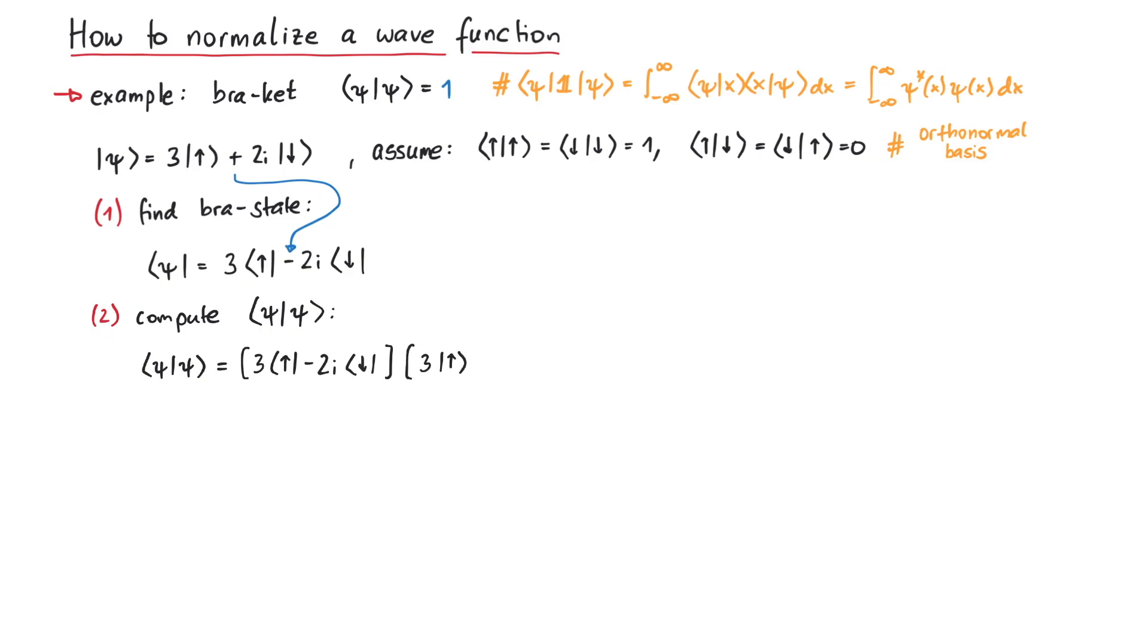The second step is to compute the bra-ket product of psi with itself. After multiplying the brackets, you see why we need the relations of up and down with each other. Therefore, we know that only two terms remain, which add up to 13. Now this should be equal to 1 for a normalized wave function. So the bra-ket product is 13 times bigger than what we need it to be.